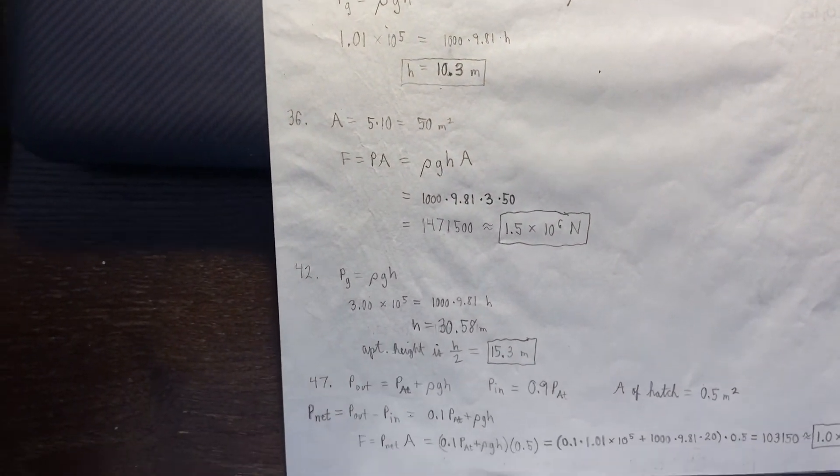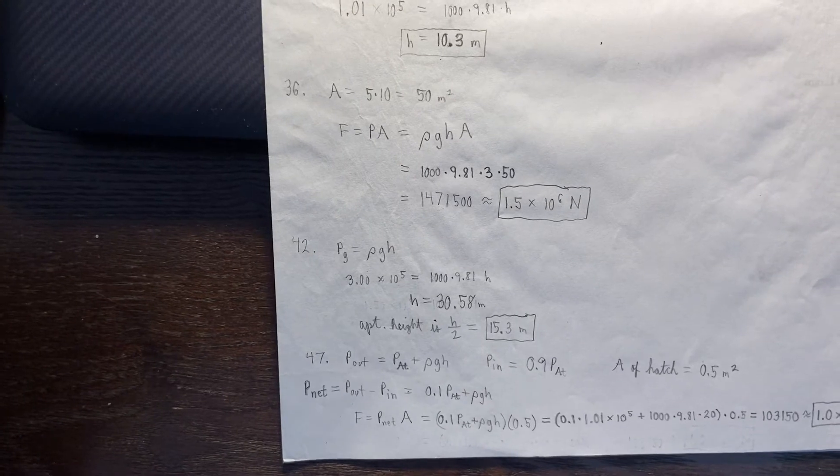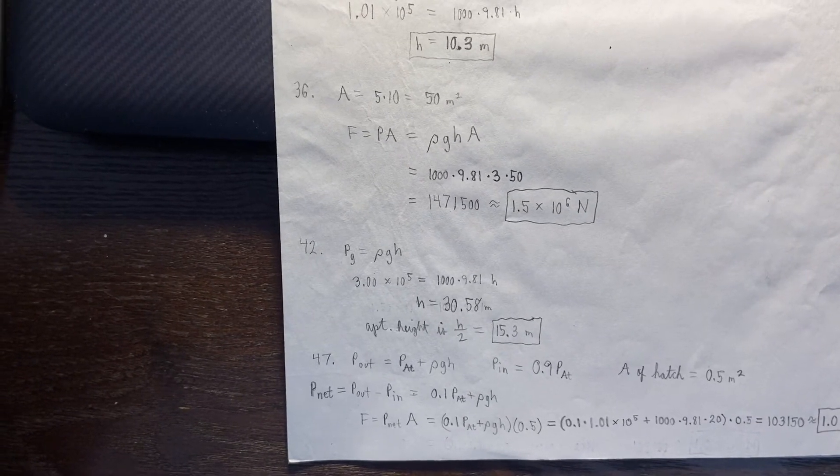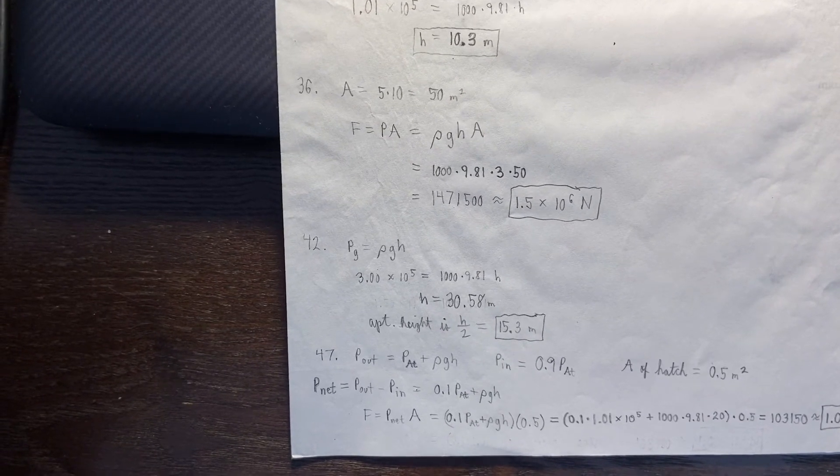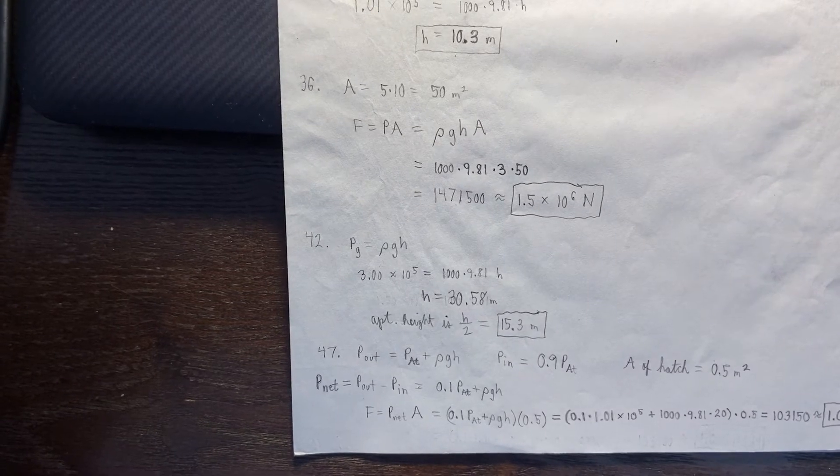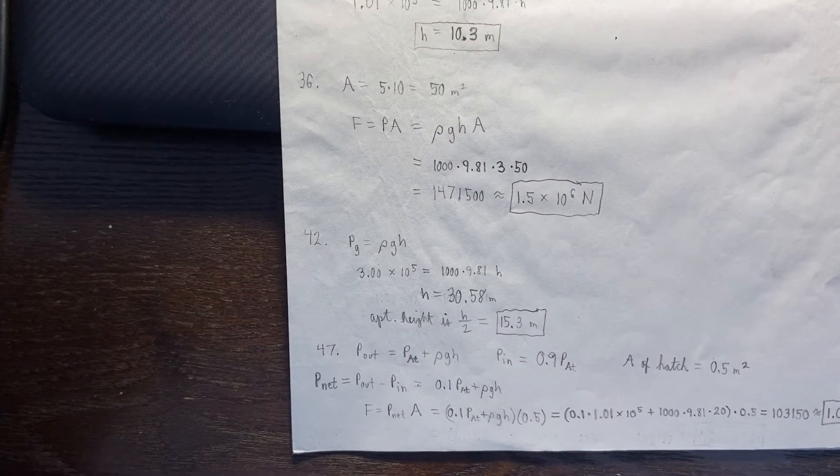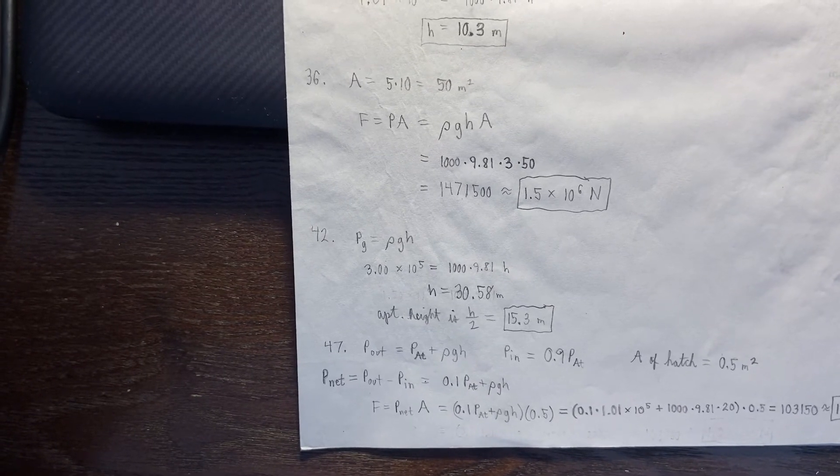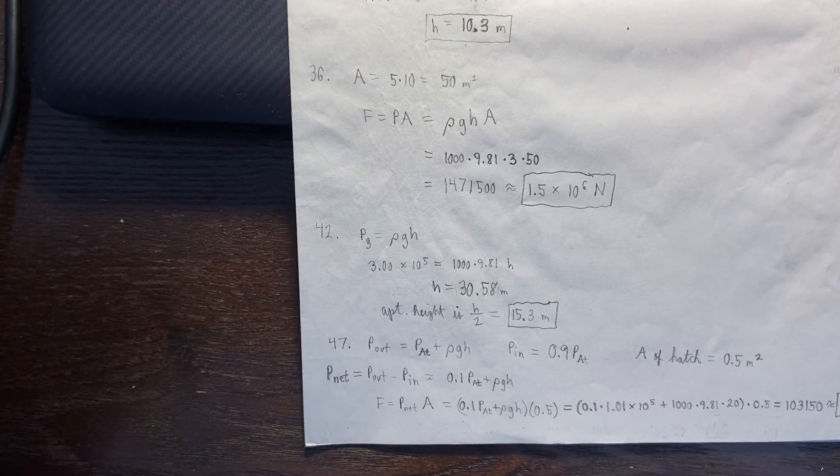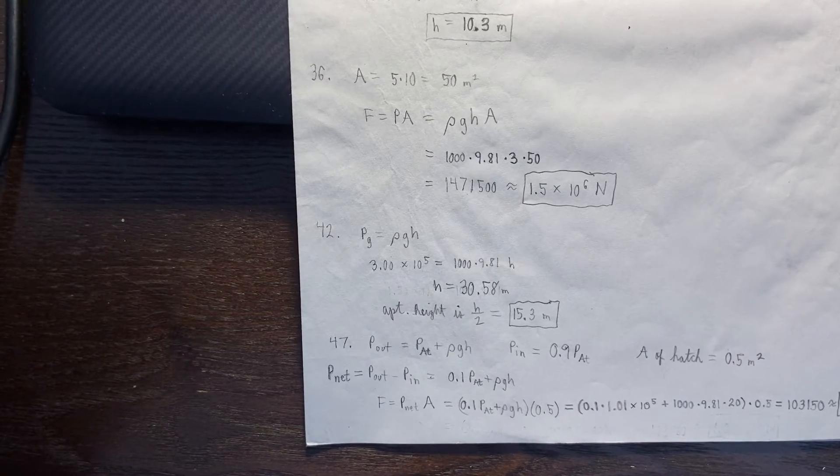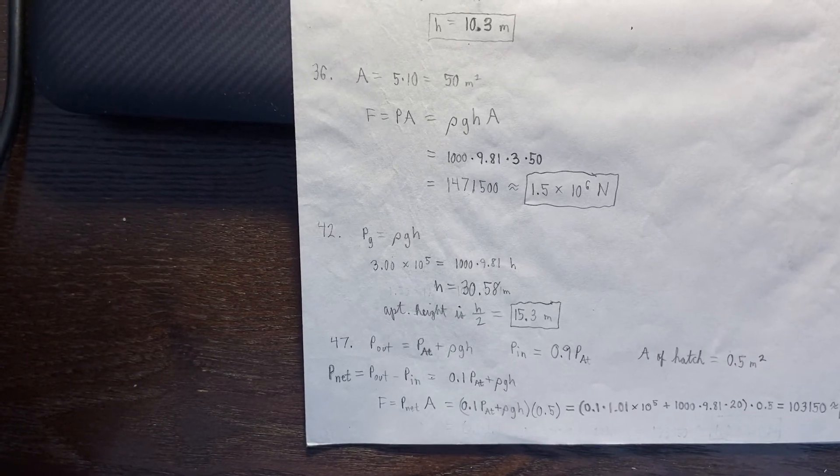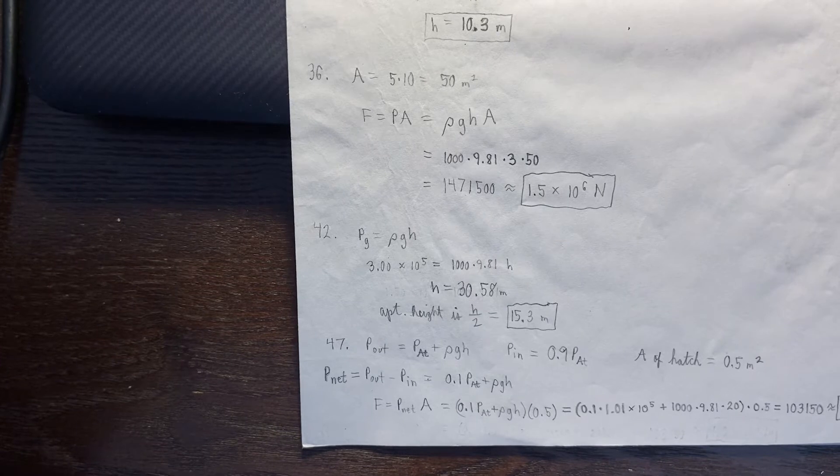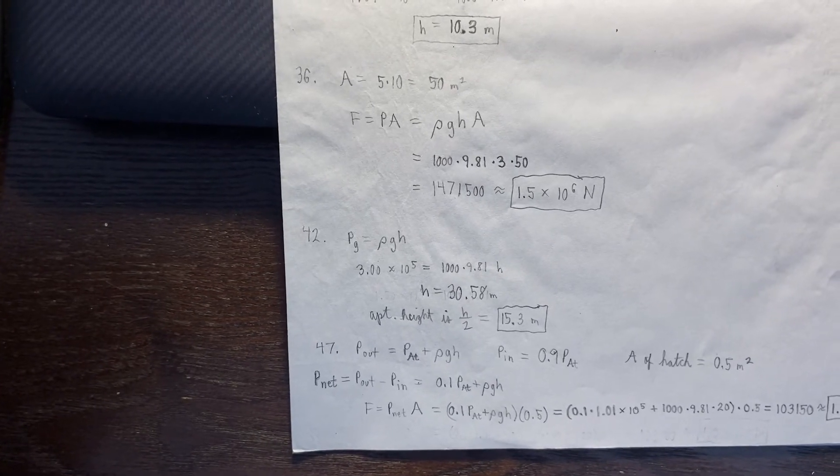All right, in 42, using gauge pressure again, I have 3.00 times 10 to the 5th for the pressure. I know the rho, and I know G, and I can find the total height, and that's going to be 30.58 meters. Now, this apartment height is halfway up, and so I've got to divide that height by 2, and that gives me 15.3 meters.